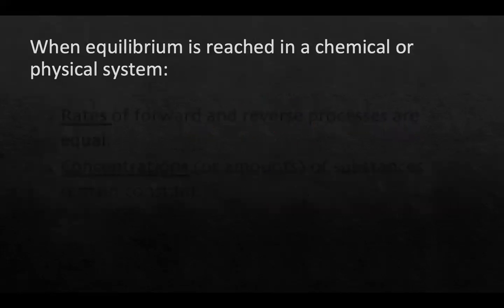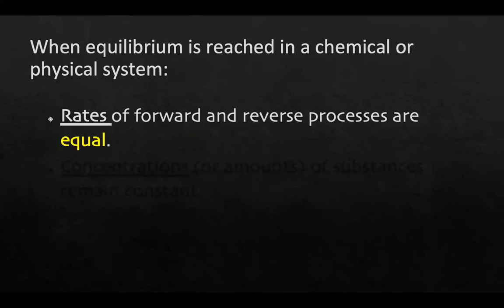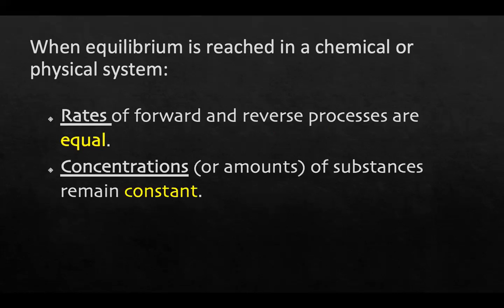When equilibrium is reached in a chemical or physical system, the rate of forward and reverse processes are equal. Imagine your water bottle. When your water bottle is out in the sun and gets misty, not all the liquid water turns to mist. It remains at equilibrium. There's an equal amount of water and mist at all times because the concentrations remain constant throughout.